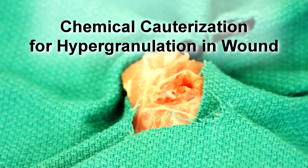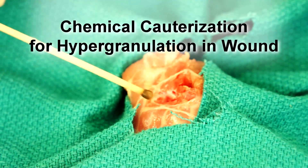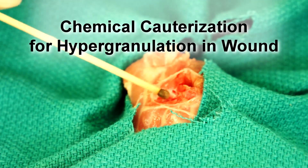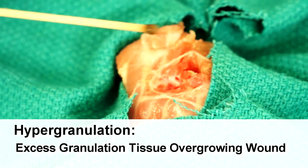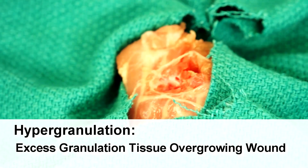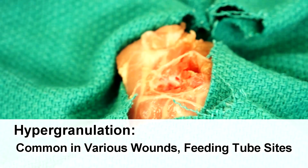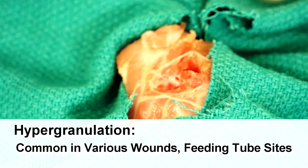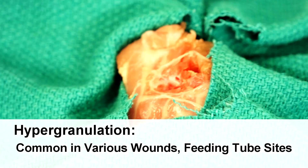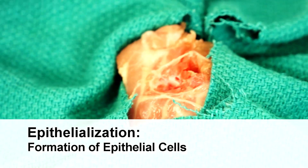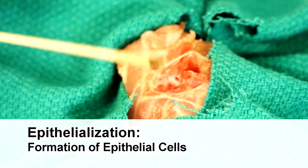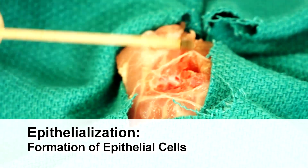Hypergranulation commonly occurs when bright red beefy granulation tissue has overgrown the edges of the wound and is now above the level of the skin or the epithelium. Hypergranulation commonly occurs in a variety of wounds and ulcers, as well as around surgical wounds such as abdominal wounds and feeding tube sites. Without destruction of a portion of the hypergranulation tissue, re-epithelialization cannot occur across the wound.